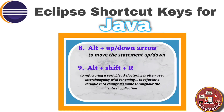The ninth shortcut key is Alt+Shift+R, which is used for refactoring a variable. Refactoring is often used interchangeably with renaming — to refactor a variable means to change its name throughout the entire application.